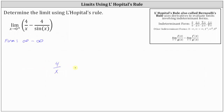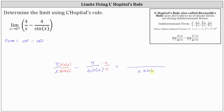We have 4 divided by x minus 4 divided by sine x. To find the difference, we need to obtain the least common denominator, which is the product of the two denominators, or x sine x. Therefore, we need to multiply the numerator and denominator of 4 over x by sine x, and multiply the numerator and denominator of 4 over sine x by x. Notice now we do have a common denominator of x sine x, and the numerator is now 4 sine x minus 4x.